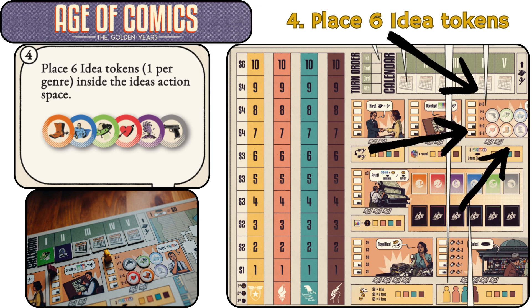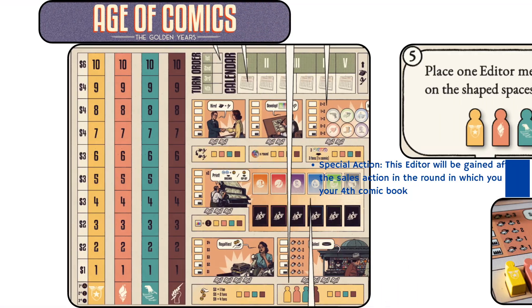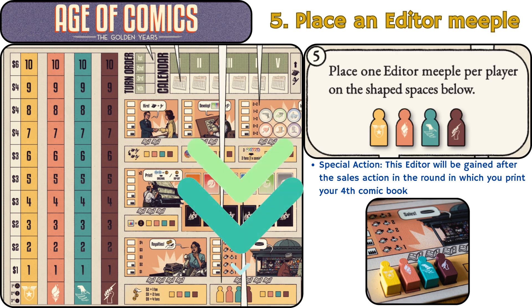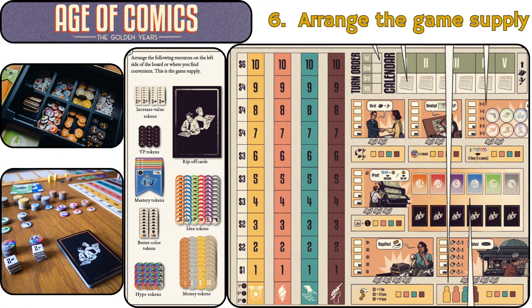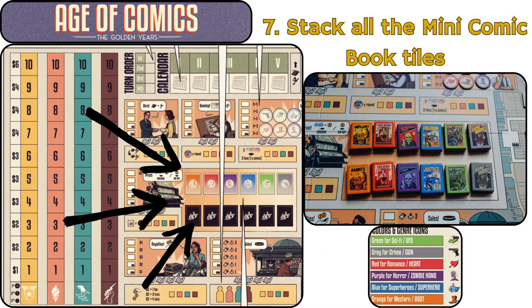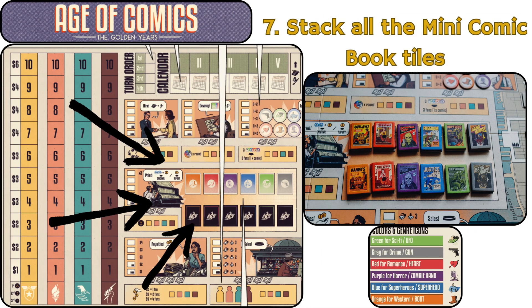Step 4: Place six idea tokens, one per genre, inside the ideas action space. Step 5: Place one editor meeple per player on the shape spaces below the special action. This editor will be gained after the sales action in the round in which you print your fourth comic book. Step 6: Arrange the following resources on the left side of the board or where you find convenient — this is the game supply. Step 7: Stack all the mini, original, and rip-off comic book tiles on the board.